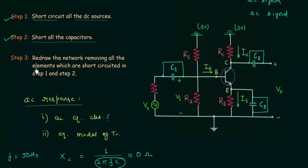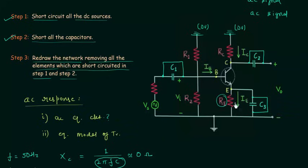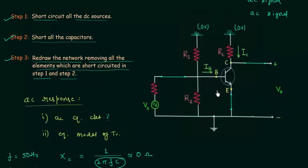In the last step we need to redraw the network, removing all the elements which are short circuited in step number one and step number two. We need to remove elements like resistance RE, since RE is short circuited. This is how the circuit will look after step number three. We can further simplify this circuit.